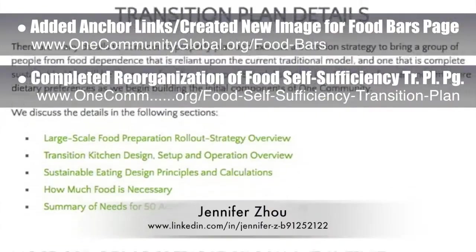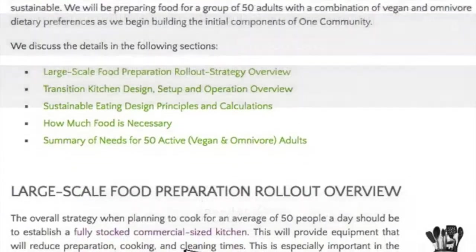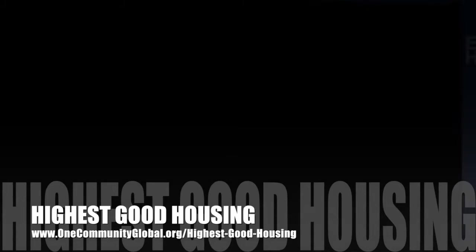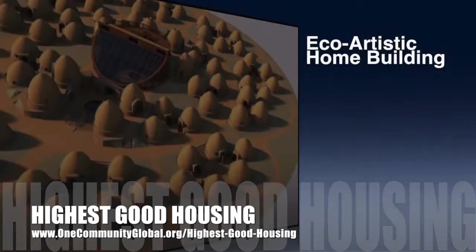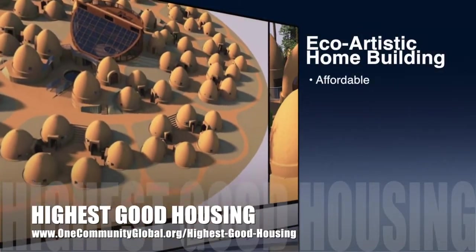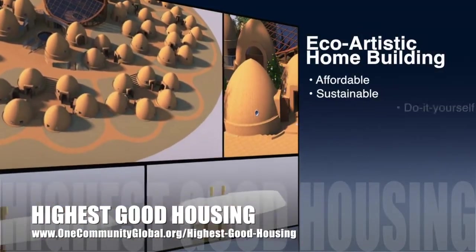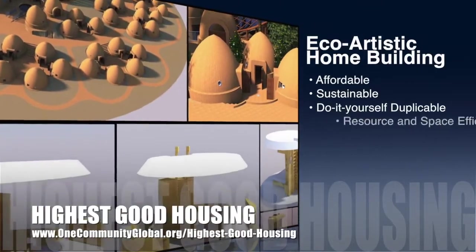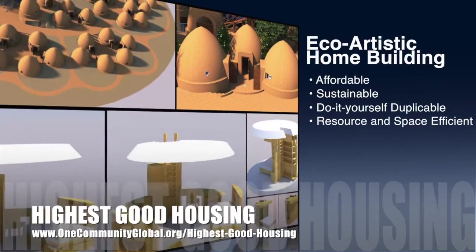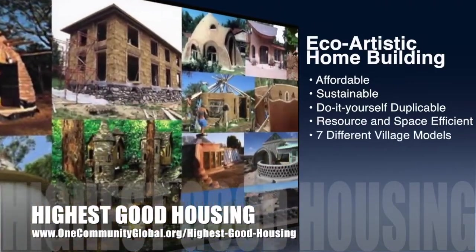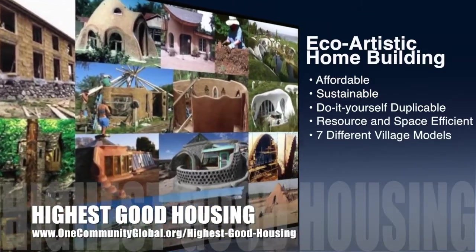The One Community approach to highest good housing is eco-artistic home building that is affordable, sustainable, do-it-yourself, duplicable, resource and space efficient, and consists of 7 different sustainably constructed village models.